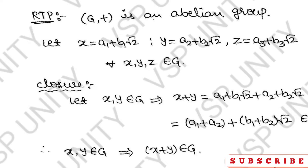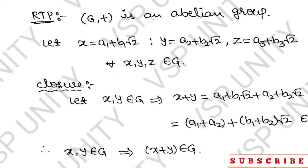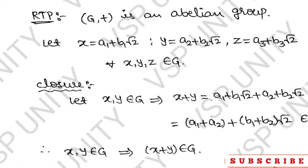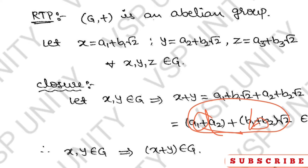Closure property. First, closure property under addition: (a1 + b1√2) + (a2 + b2√2) = (a1 + a2) + (b1 + b2)√2, which is again in the form a + b√2.